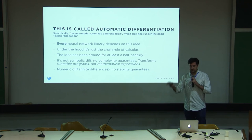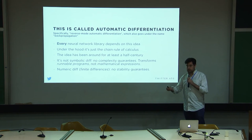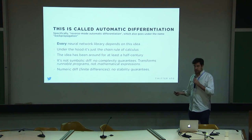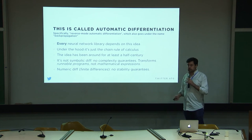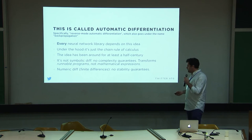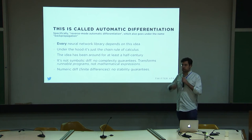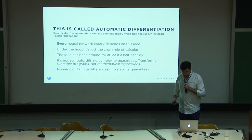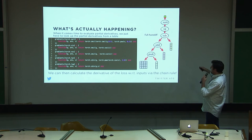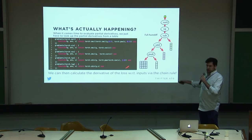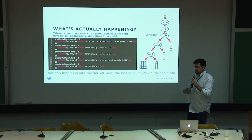Automatic differentiation is not symbolic differentiation. The input of autodiff is a runnable program and its output is another runnable program, whereas symbolic differentiation takes in a mathematical expression and outputs a mathematical expression — and has no good complexity guarantees, so it can blow up easily. Autodiff has theoretical guarantees that won't happen. It's also not finite differences or numerical differentiation, which has no numerical stability guarantees, whereas autodiff produces a program with exactly the same numerical stability as your input.